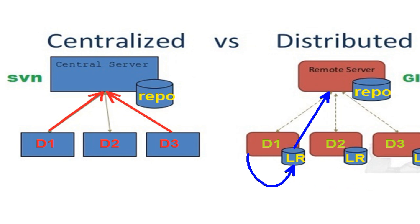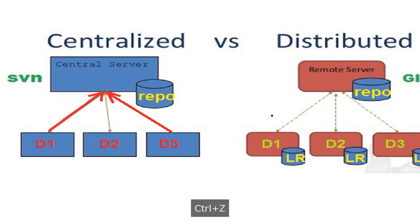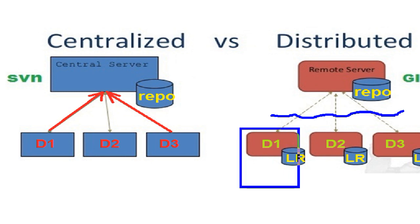In case of centralized, if you lose the network, then developers may not add their code to the central repository. But with distributed, even if you lose the network, developers can still add their code to the local repository.